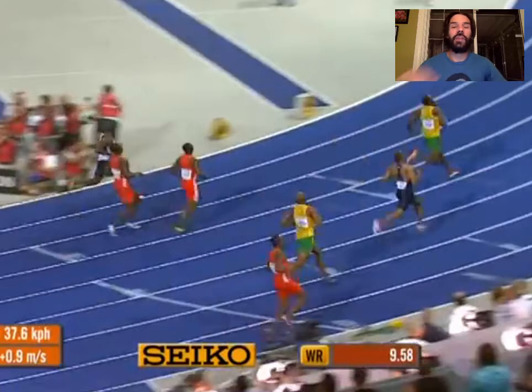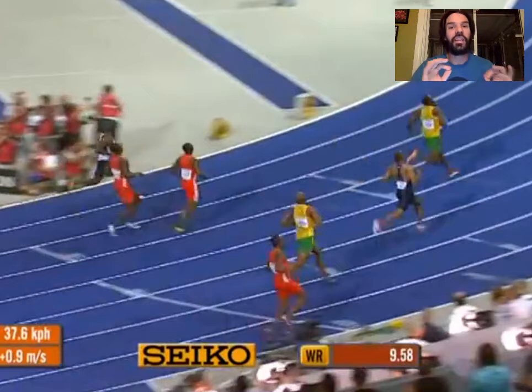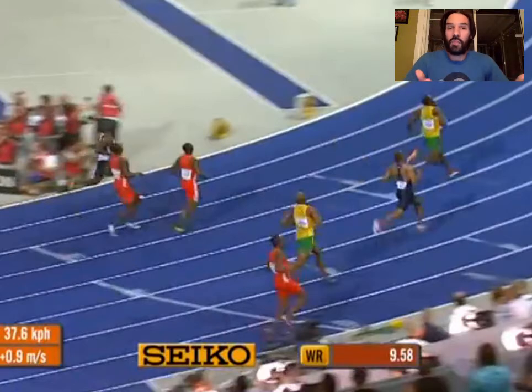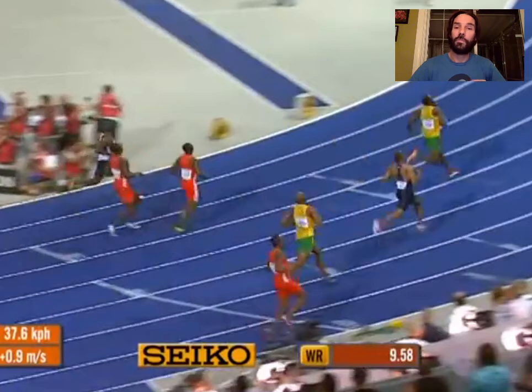But what does it have to do with the Intermediate Value Theorem? So what Usain Bolt just did here, he started at time 0 at a position of 0 meters, and reached 100 meters in 9.58 seconds. So the Intermediate Value Theorem is very simply telling us the fact that if I pick any distance between 0 and 100 meters, then Usain Bolt must have gone through that point at some time between 0 and 9.58 seconds. That's pretty obvious, right?